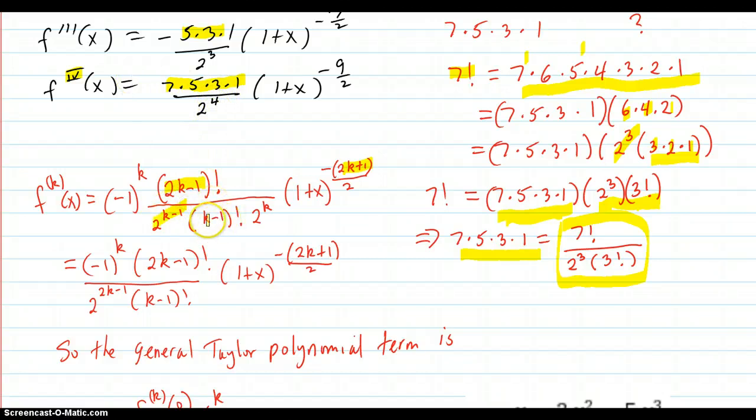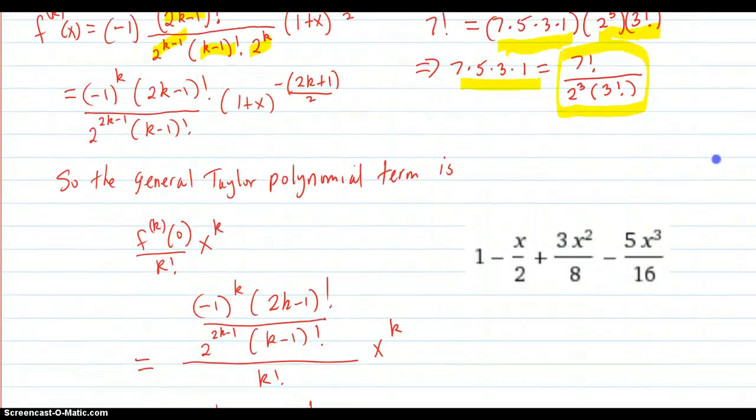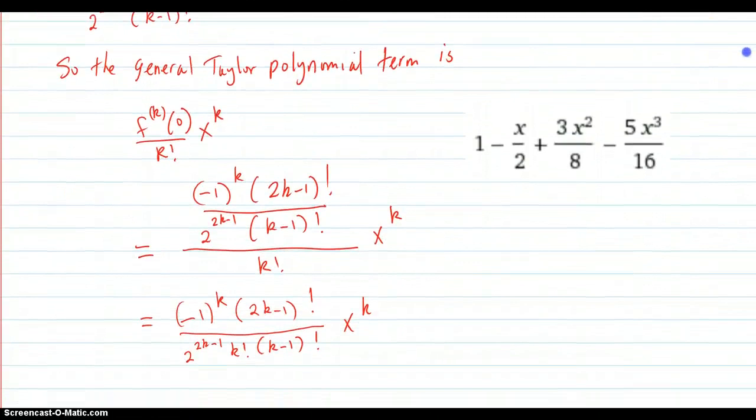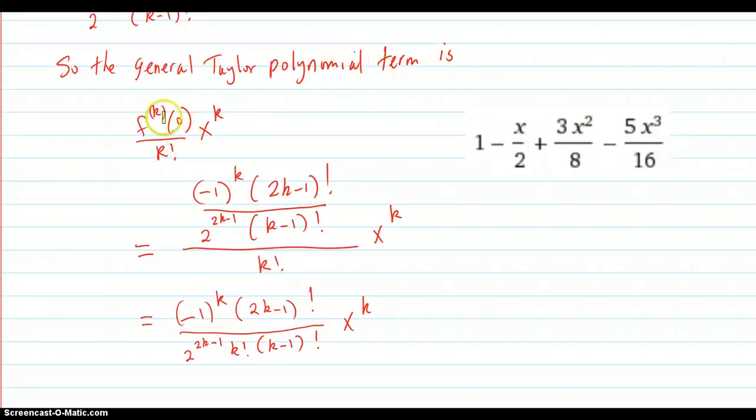Simplify that a little bit, and you get this. The general term of the polynomial is now this divided by k factorial, which is this, which comes out simplified to this. So those are the terms of your Taylor polynomial. The general term of the polynomial.